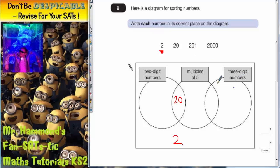So 201 has to go in this circle. But it can't go in the overlapping bit because if it goes in the overlapping bit we're saying it's a multiple of 5, and it ends in a 1 and that can't be a multiple of 5. So it's got to go in this circle but not in the overlapping bit. So we've just got to put 201 in there.